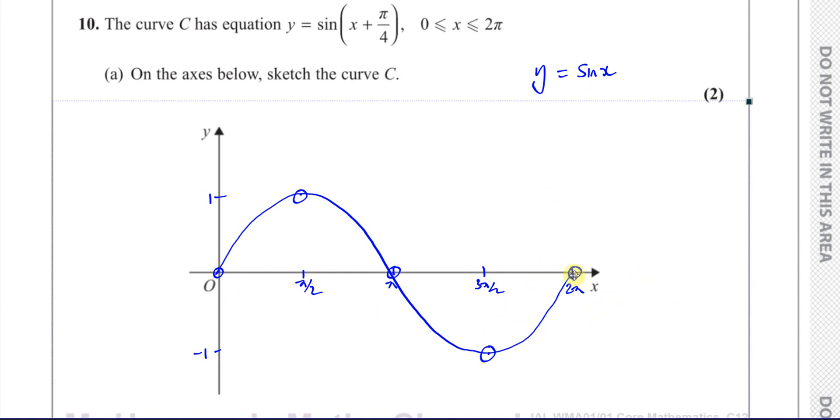Now, how does Y equals sine of X plus pi over 4 look? If you say that sine of X is f of X, then Y equals sine of X plus pi over 4 would be the same as Y equals f of X plus pi over 4.